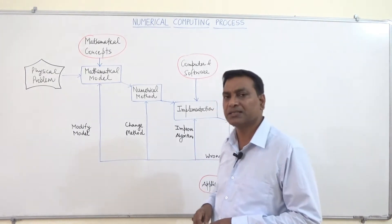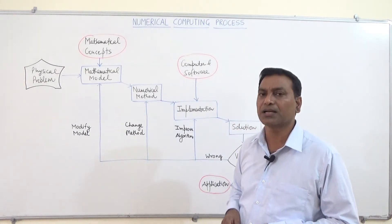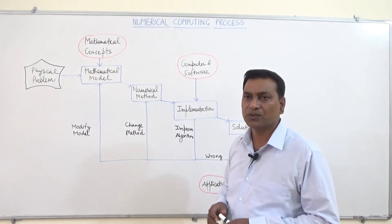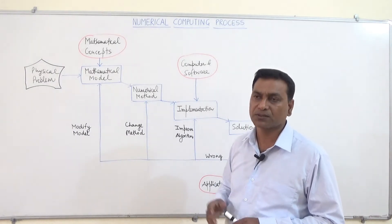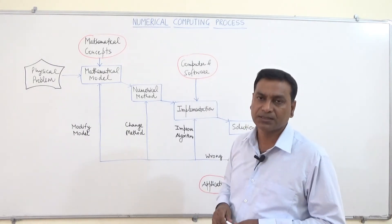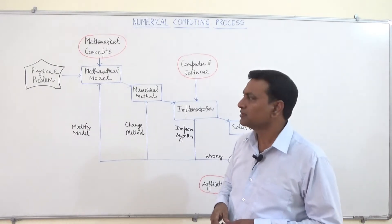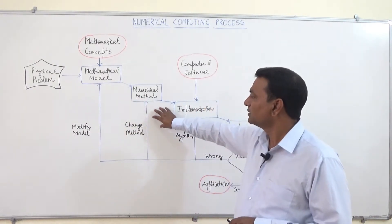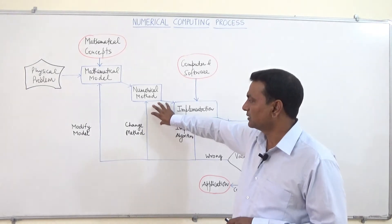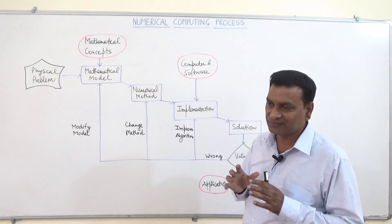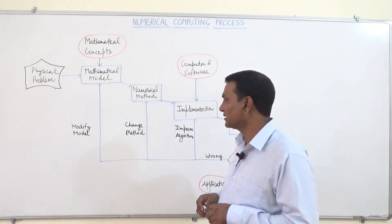For that particular mathematical model we make a numerical method. As we know, from the mathematical model we are unable to do the calculations manually, and when the calculations become very complex, then we move towards numerical methods. This numerical method basically tries to find out the approximate solution — this is an approximate method.